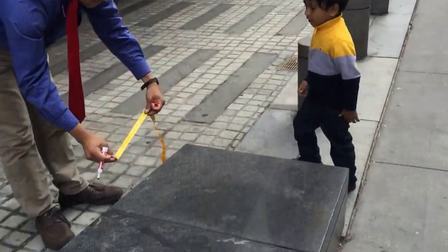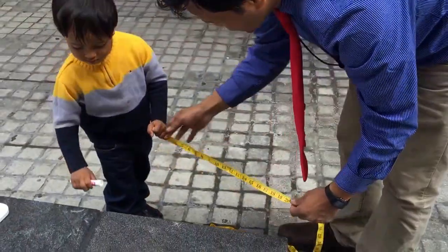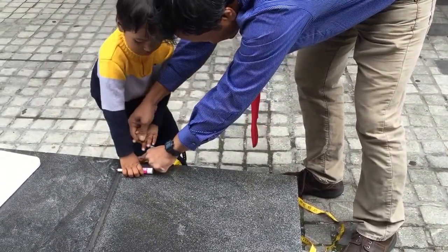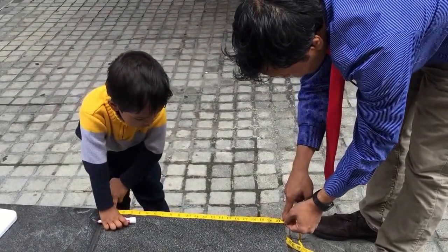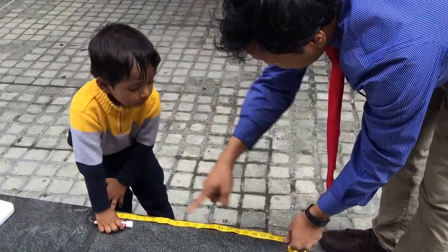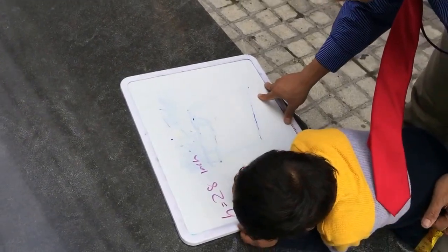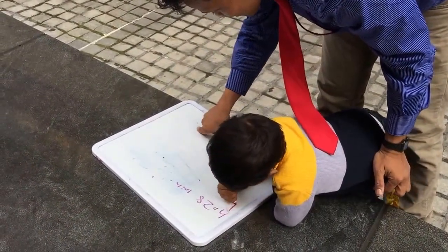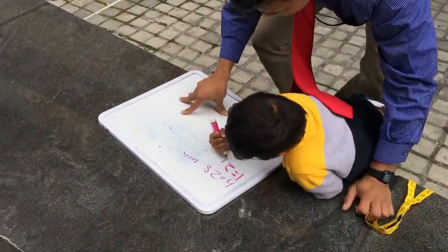Now, we're gonna see the length. Hold this one right here, right in this vertex. How many inches? 21. So, write 21. The length is 21. Write length as L. L for 21. 21 inches.